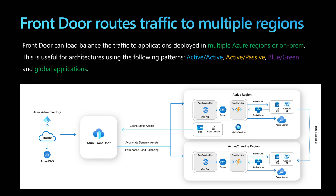The main feature of Azure Front Door is that it can route traffic to multiple regions — those regions could be Azure regions or on-premise. This enables architectures like Active-Active, Active-Passive, Blue-Green, or global applications.